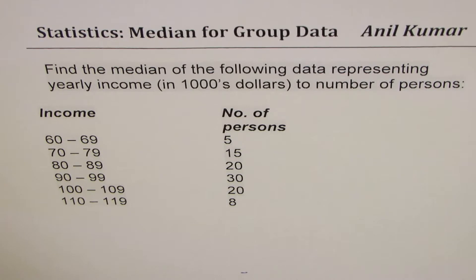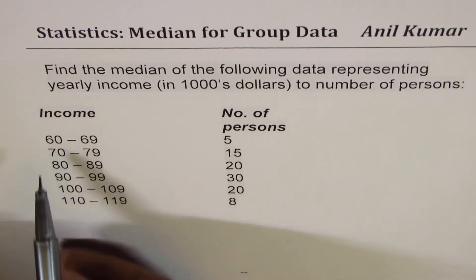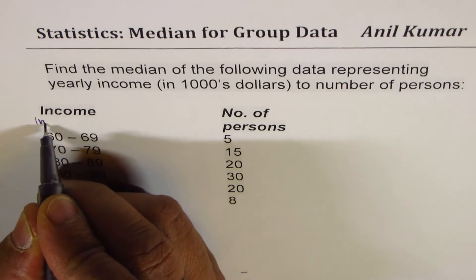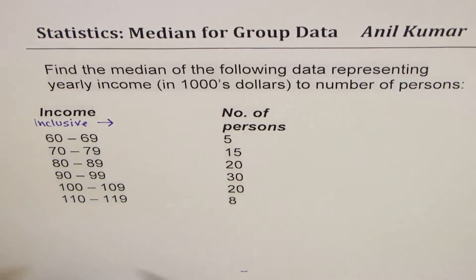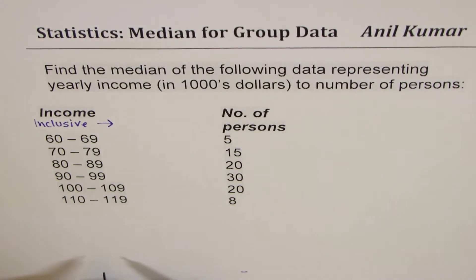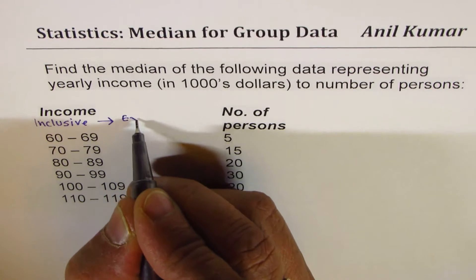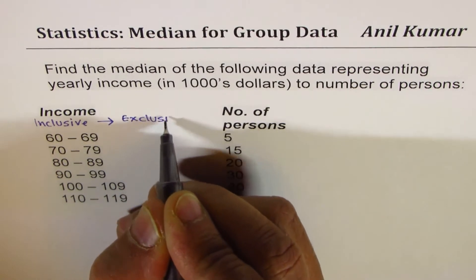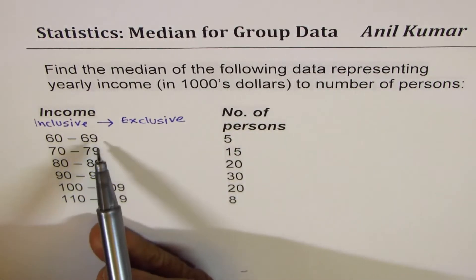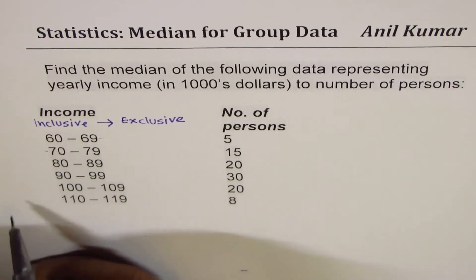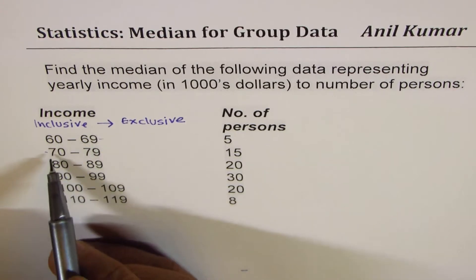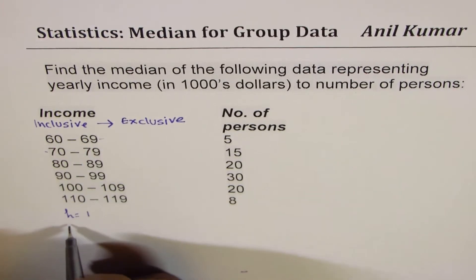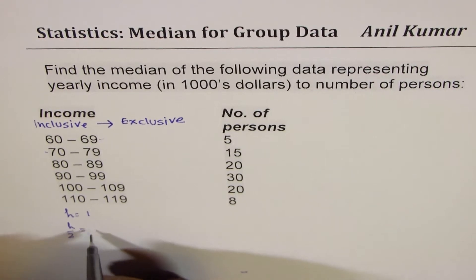It is important to understand that whenever we have data where it is kind of inclusive, we have to convert it to the form which is exclusive. How do we do that? We check the difference between these two numbers, which is in this case 1. We add and subtract half of that. So here h is 1, so we'll add and subtract half of h, which is 1 divided by 2 or 0.5.